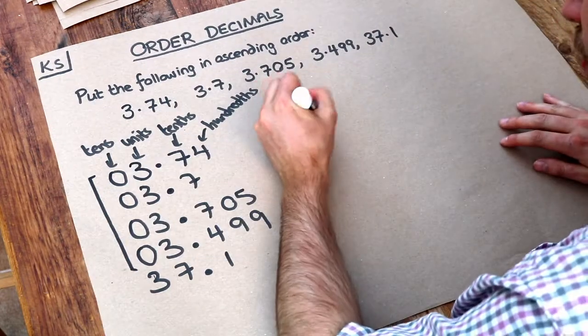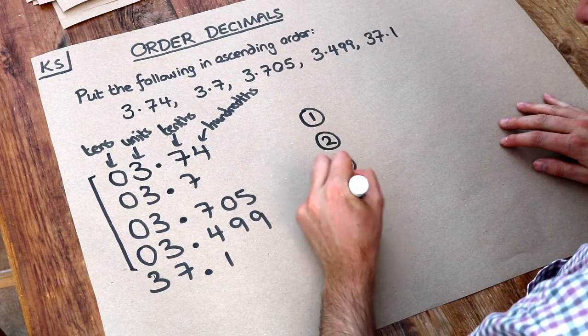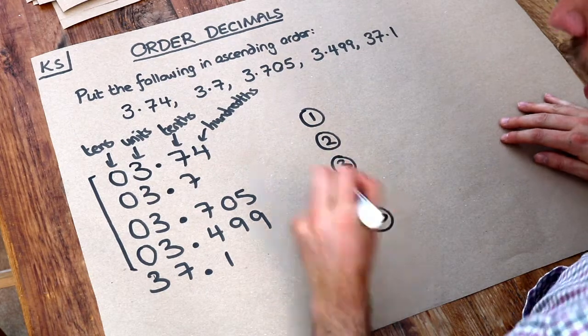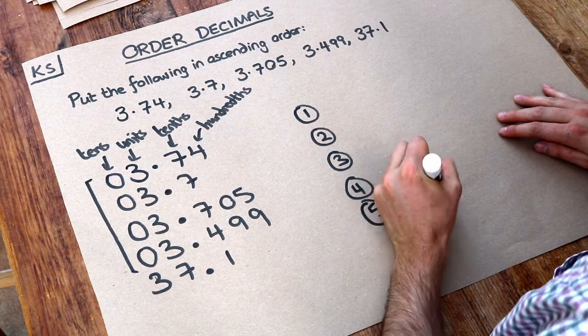So let's put that there first. If we're putting these in order, one, two, three, four, five, that's the highest tens digit, so that's going to go last.